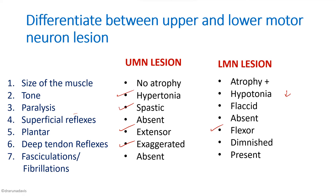In LMN lesion, almost everything is decreased: hypotonia, flexor plantar, decreased deep tendon reflexes — except for fasciculations and fibrillations which are present. Whereas in UMN lesion, everything is increased: hypertonia, spasticity, extensor plantar, exaggerated deep tendon reflexes. A useful memory aid: for upper motor neuron lesion, everything is up and increased; for lower motor neuron lesion, everything is decreased or low.